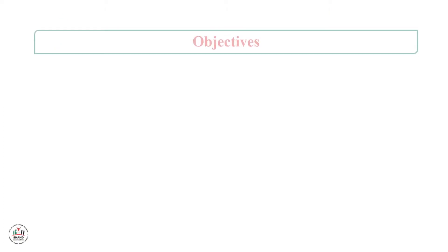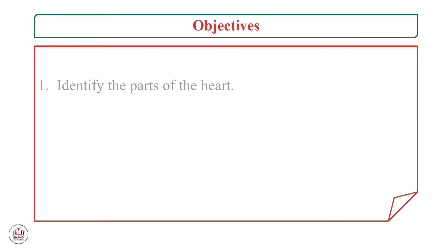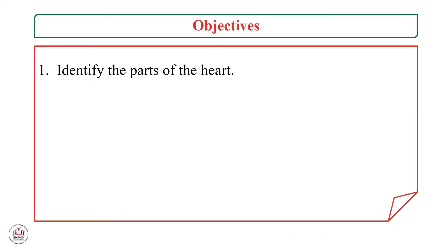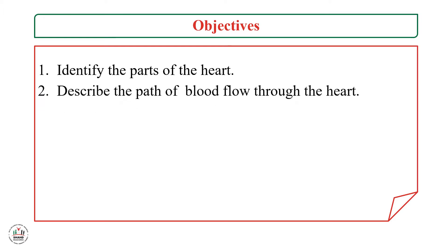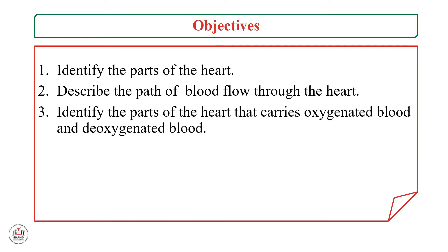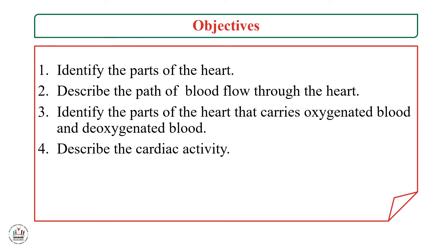Our objectives of this lesson are: First, identify the parts of the heart. Second, describe the path of blood flow through the heart. Third, identify the parts of the heart that carry oxygenated blood and deoxygenated blood. Fourth, describe the cardiac activity.